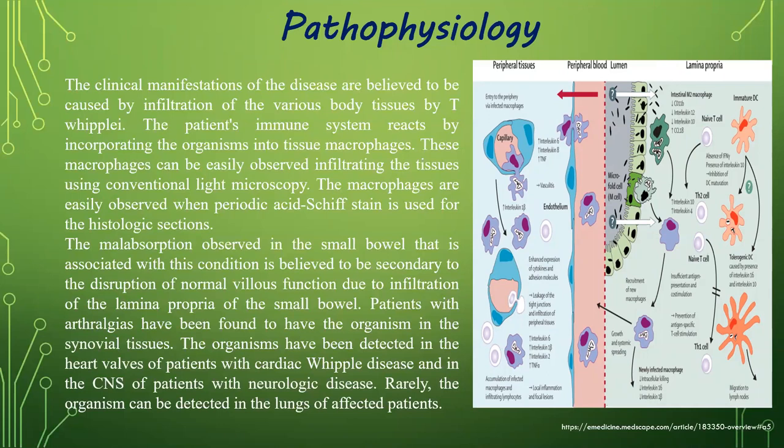The patient's immune system reacts by incorporating the organism into tissue macrophages, which can be easily observed when periodic acid-Schiff stain is used for histological sections. Malabsorption often observed in the small bowel is believed to be secondary to disruption of normal villus function due to infiltration of the lamina propria. Patients with arthralgias have been found to have the organism in synovial tissues. The organism has been detected in the heart valves of patients with cardiac Whipple disease and in the central nervous system of patients with neurological presentations. Rarely, the organism can be detected in the lungs.